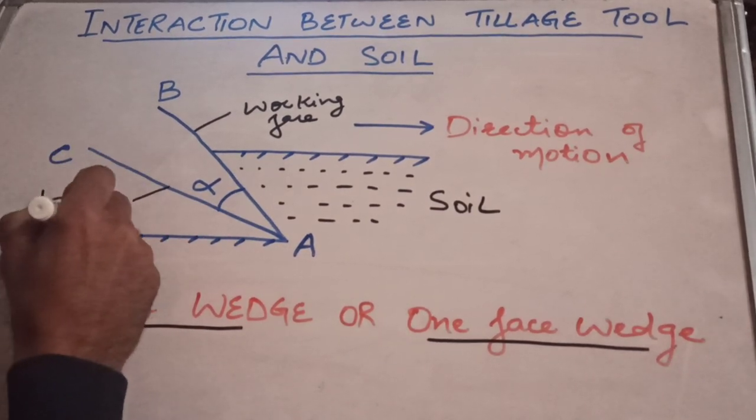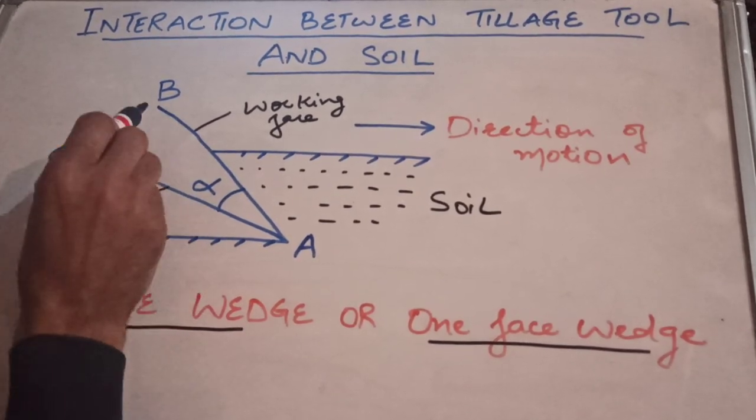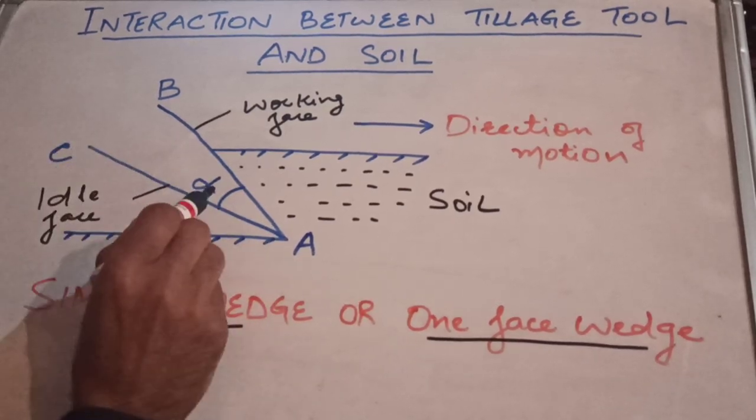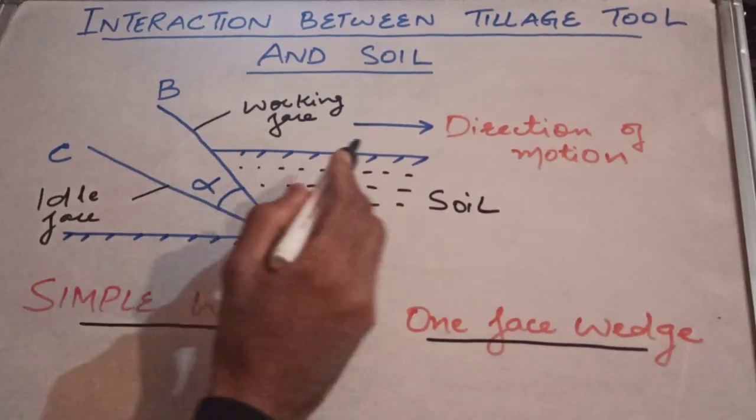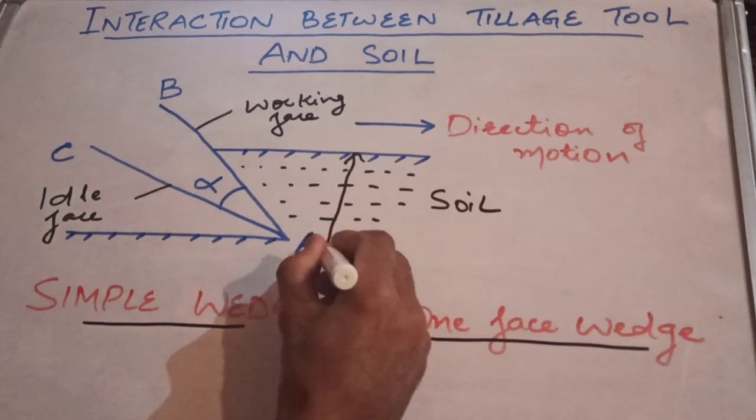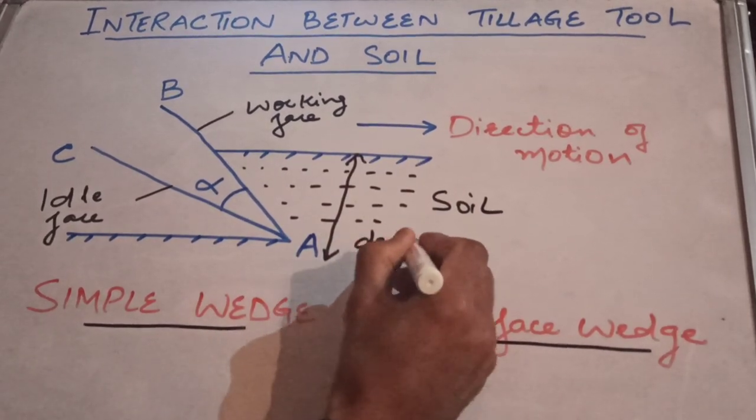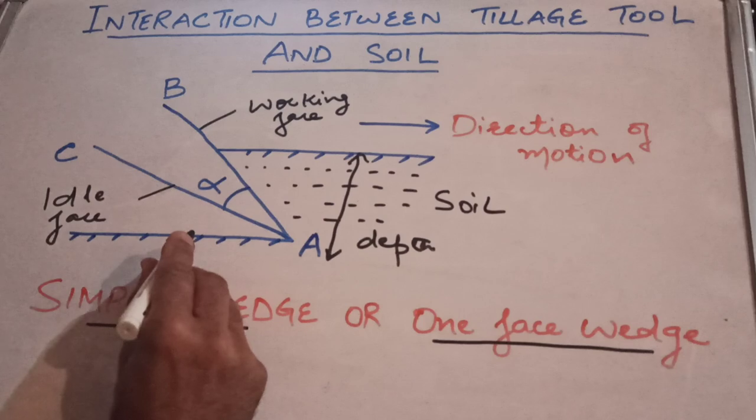This wedge is making an angle alpha with the horizontal surface. From top to bottom, this is the depth up to which you have penetrated your tillage tool.